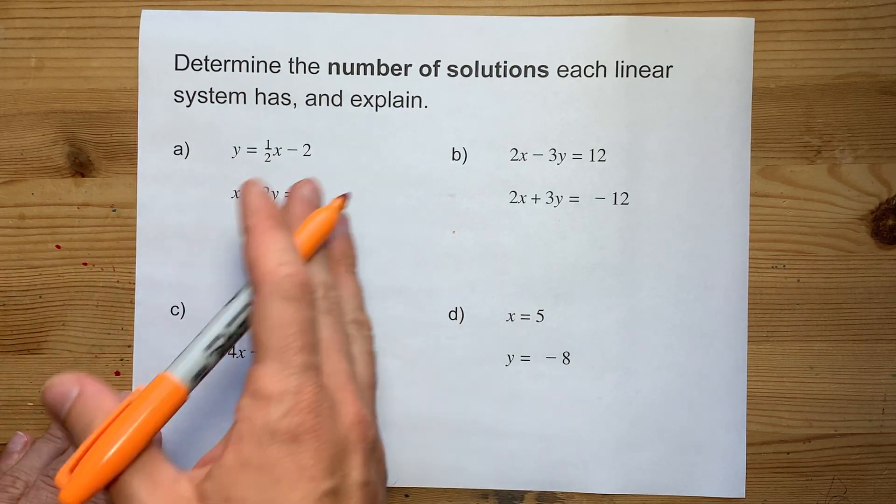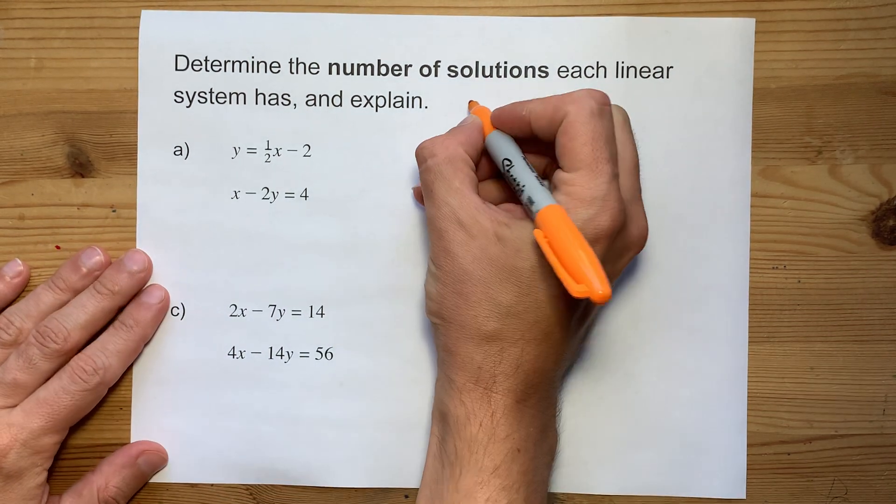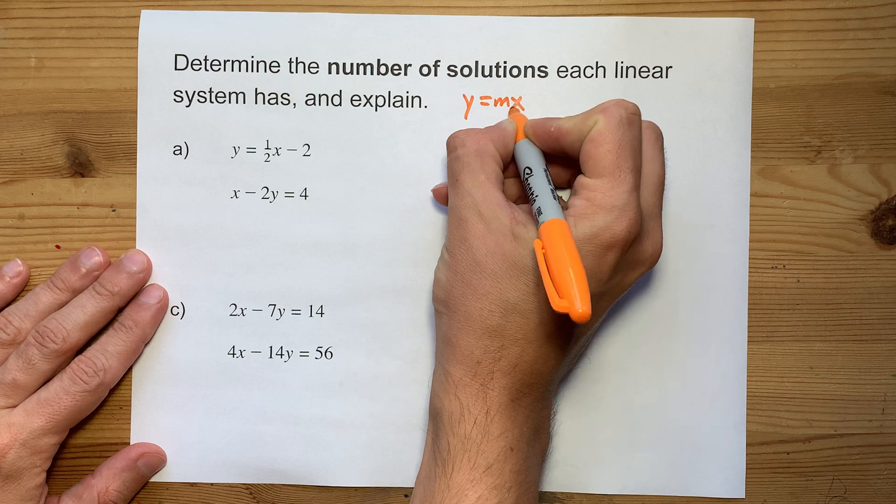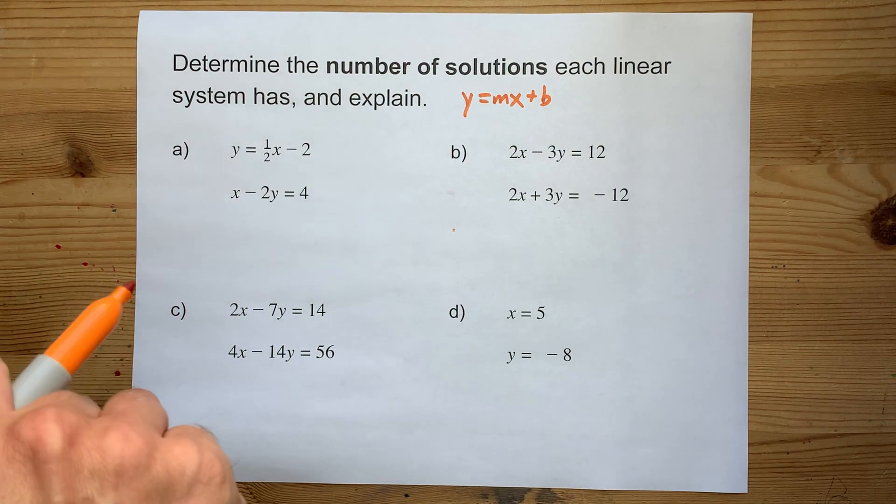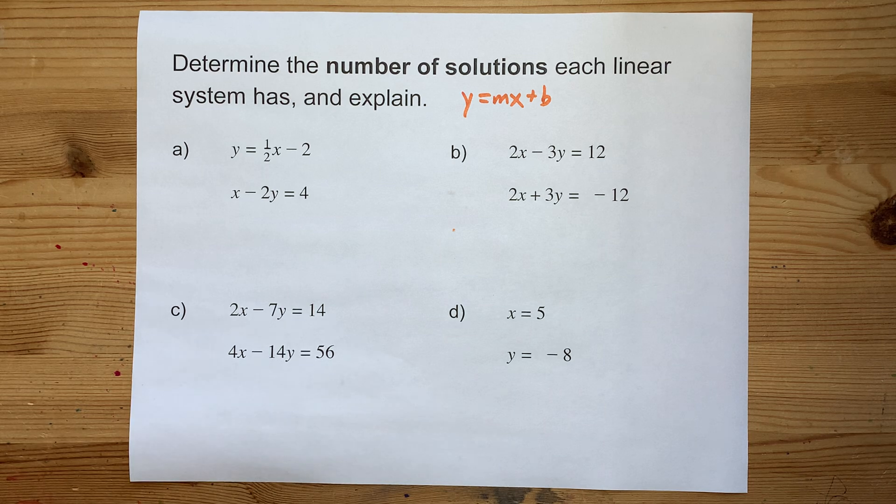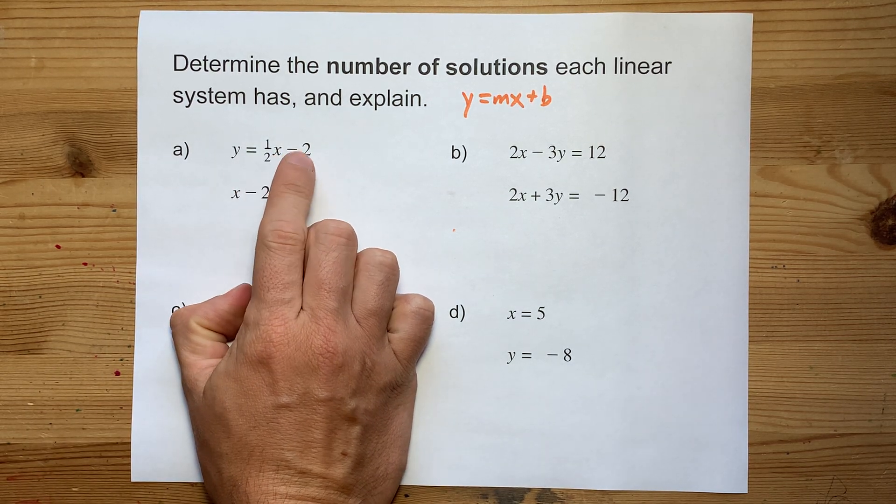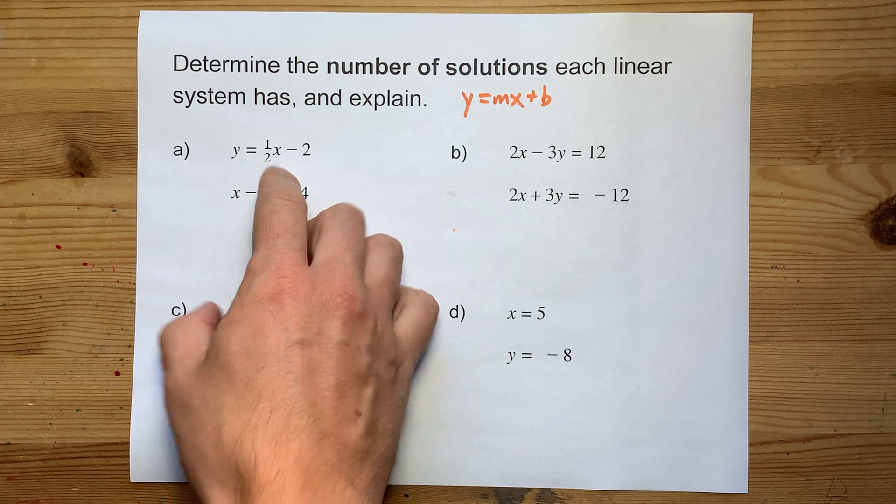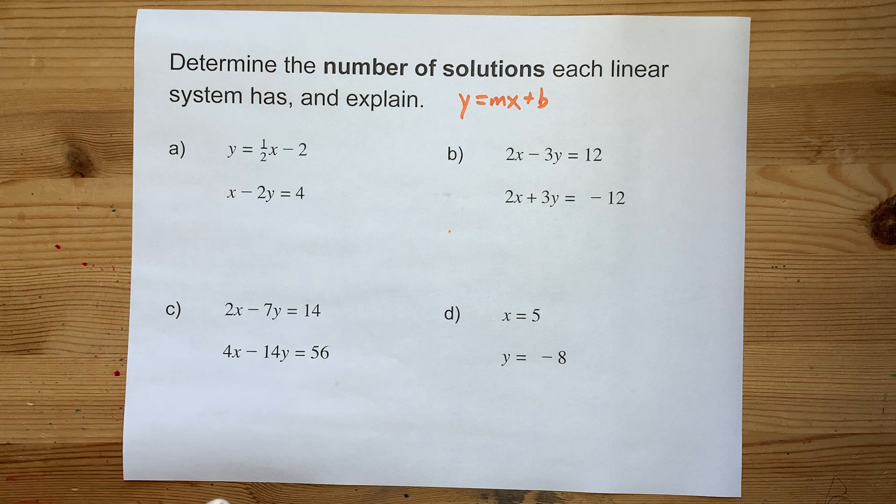The real trick is to convert all of these to y equals mx plus b form. That way you can read the slope and y-intercept directly from the equation. Alright, so let's get to it. This is already in y equals mx plus b form because of the arrangement of the letters. This one is not yet, though, so let's do that.